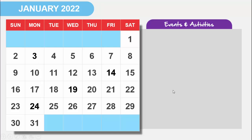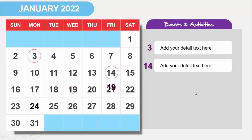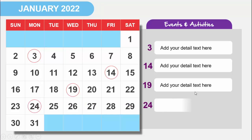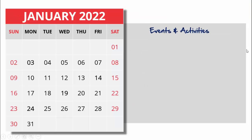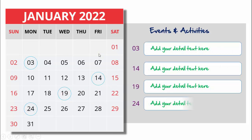When I click, you can see here the first event on the third — you can add your detailed text. Then the 14th, you can see the font color is also getting changed, then it's the 19th and then the 24th. Something like this. I've also created one more slide with a slight difference — you can see here I've put the month like this.